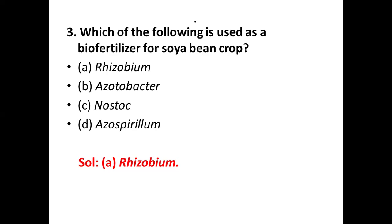Nostoc is a blue-green alga and cyanobacteria that can fix atmospheric nitrogen into nitrogenous compounds using special cells known as heterocysts; it is used as a biofertilizer in paddy fields and also reduces soil alkalinity. Azotobacter is a free-living organism that fixes nitrogen and enriches the nitrogen content of soil; it is used in tea and coffee fields as a biofertilizer. Azospirillum is similarly a free-living nitrogen-fixer used in tea and coffee fields.